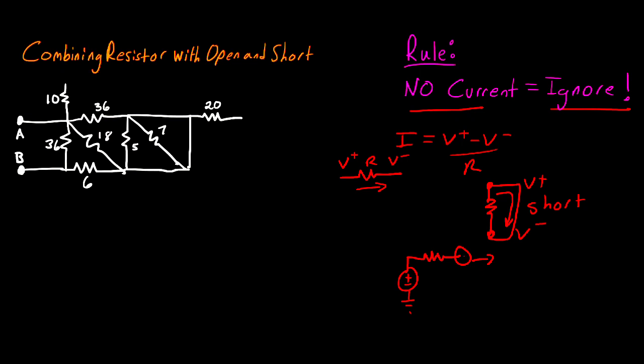If there's no current coming out of that node, then there can't be any current going into the node, and you know that the current through the resistor is equal to zero. And again, you're able to ignore this.